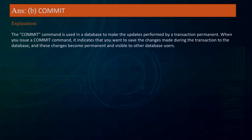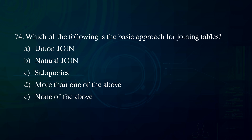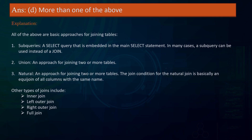Which of the following is the basic approach for joining tables? A. Union join B. Natural join C. Subqueries D. More than one of the above E. None of the above. Answer: More than one of the above. Explanation: All of the above are basic approaches for joining tables. Subqueries are SELECT queries embedded in the main SELECT statement; in many cases a subquery can be used instead of a join. Union is an approach for joining two or more tables. Natural join is also an approach for joining tables — the join condition is essentially an equi-join of all columns with the same name. Other types of joins include inner join, left outer join, right outer join, and full join.